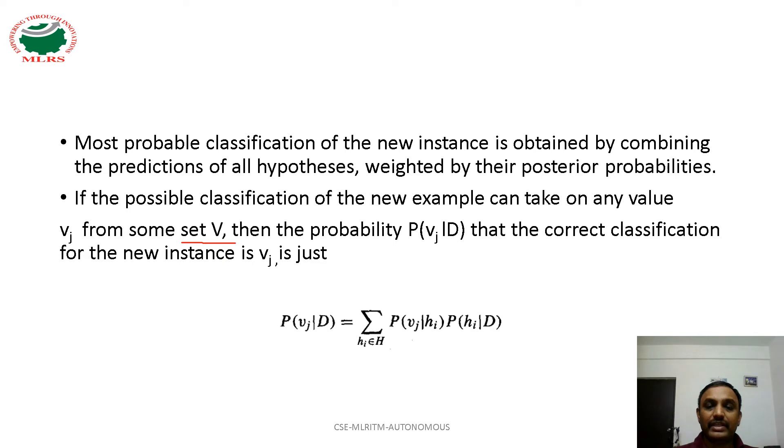then probability of Vj on D, that the correct classification for the new instance is Vj, is given by the sum of their product values of probability of Vj on HI and probability of HI on training data.